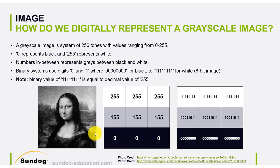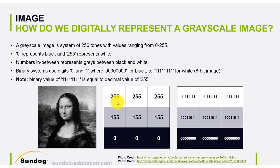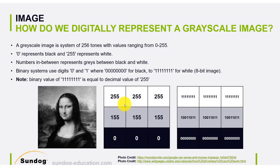So if we have a black dot within the image, that pixel has a value of 0. A lighter area might reach 255, which is pure white. Values in between, like 155, represent different shades of gray. That's how we represent an image in a decimal number format.